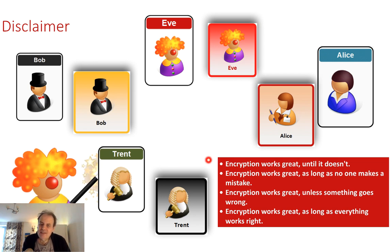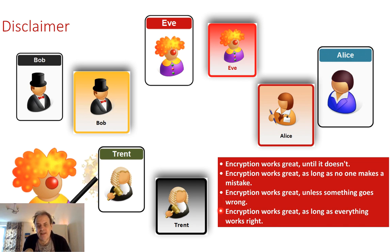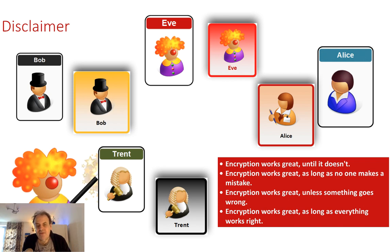Encryption works great until it doesn't — it works great as long as no one makes a mistake, as long as nothing goes wrong, and as long as everything else works right. The methods outlined are pretty robust in themselves, but obviously other things can go wrong in their setup.